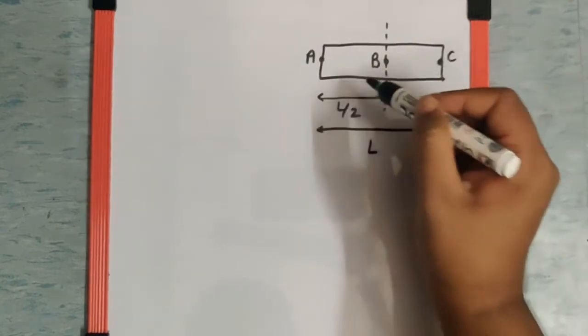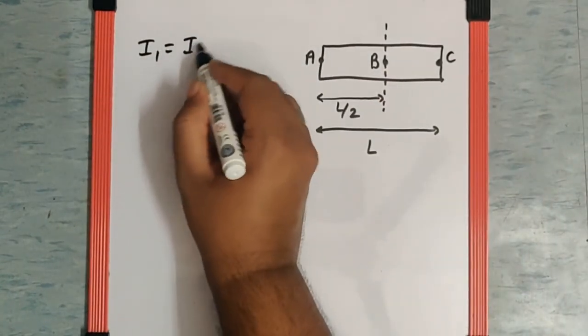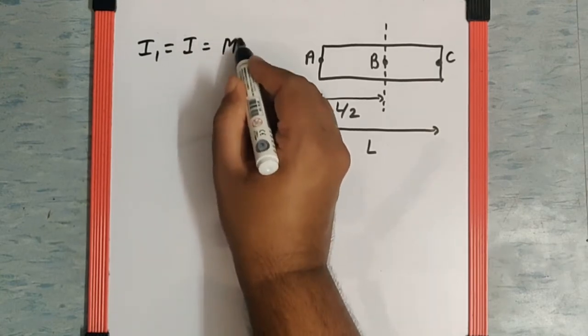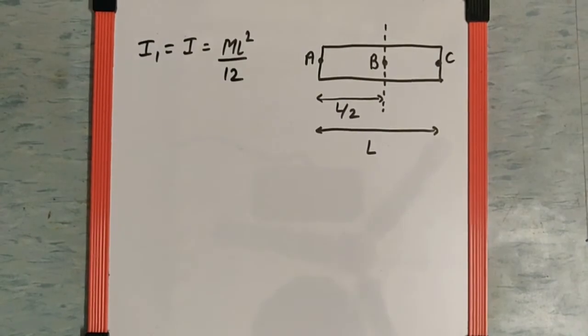Now in the first case, the moment of inertia is taken from this axis for the entire rod, and that will be I₁ which is I, which by formula will be ML² by 12, the standard formula for the axis passing through the center of the rod and perpendicular to the rod.